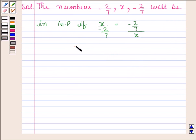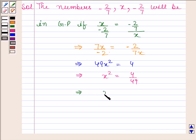This implies 7x/(-2) = -2/(7x), which implies 49x² = 4, which implies x² = 4/49, which implies x = ±2/7.